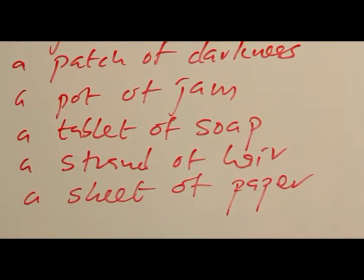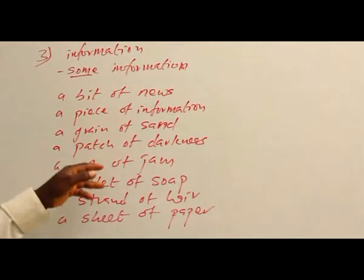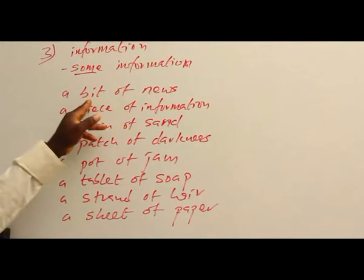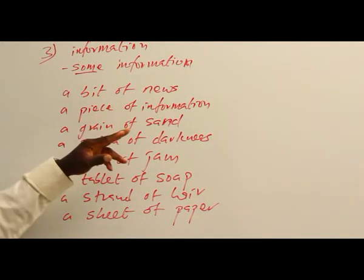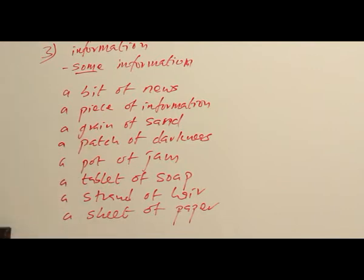Now, what we have here — we are using partitive. The partitive: all of them are countable. We can say 'bit of news' or 'bits of news,' 'a piece of information' or 'pieces of information,' 'a grain of sand' or 'grains of sand,' 'a patch of darkness' or 'patches of darkness,' 'a pot of jam' or 'pots of jam,' 'a tablet of soap' or 'tablets of soap,' 'a strand of hair' or 'strands of hair,' 'a sheet of paper' or 'sheets of paper.'